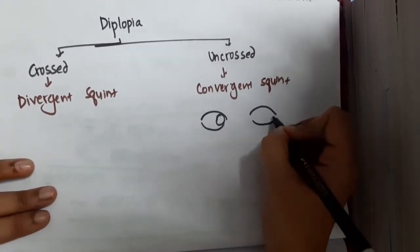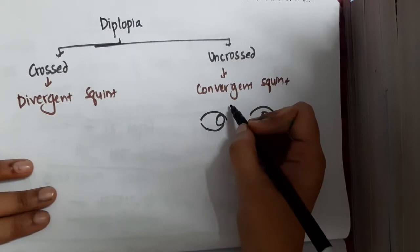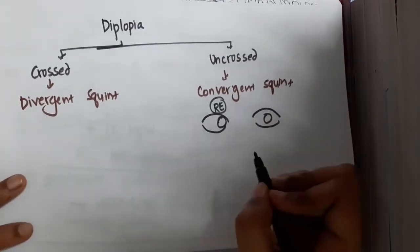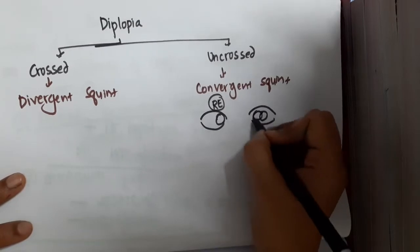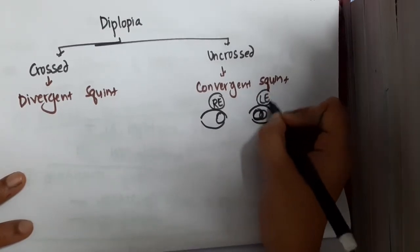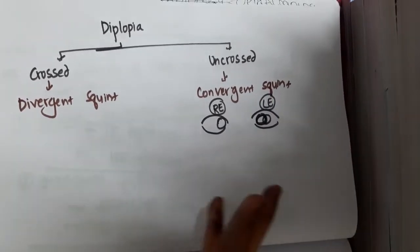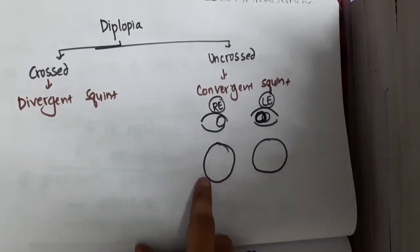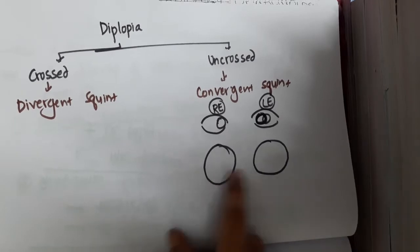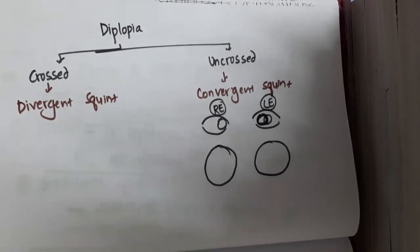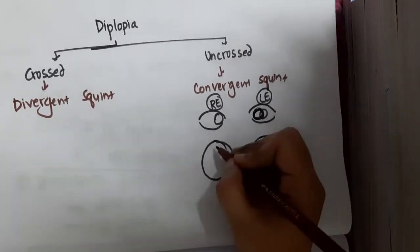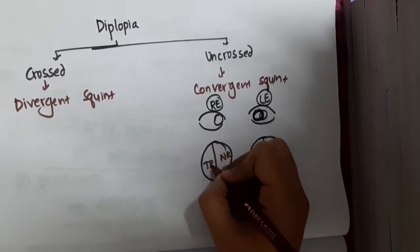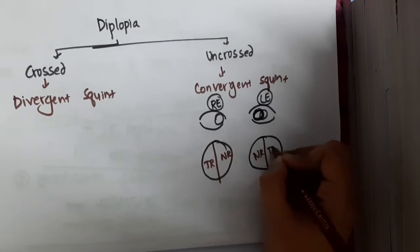In convergent squint, both the right eye and left eye are converging. In the retina we have two parts: the nasal retina and the temporal retina — nasal retina on one side and temporal retina on the other, for each eye.